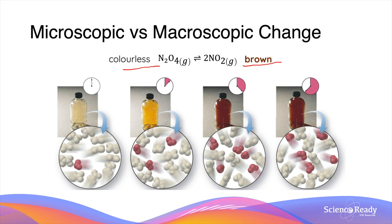This colour change continues until the system reaches dynamic equilibrium, where the rate of the forward and reverse reactions become equal. At equilibrium the colour remains unchanged because the concentrations of N2O4 and NO2 are not changing — no macroscopic change. However, microscopic changes still occur as molecules continue to collide and undergo both forward and reverse reactions.